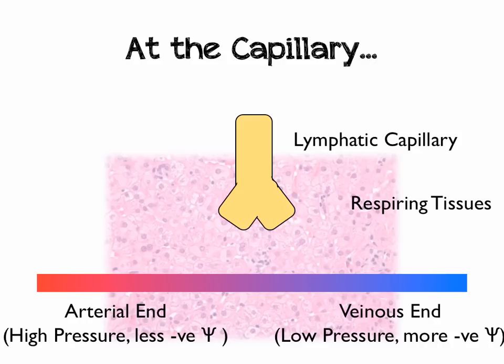You have many of these all around your body to mop up excess fluid. At the capillary itself, we've got two ends: the arterial end, which has really high pressure and a less negative water potential, and the venous end, which is at low pressure and has a more negative water potential.